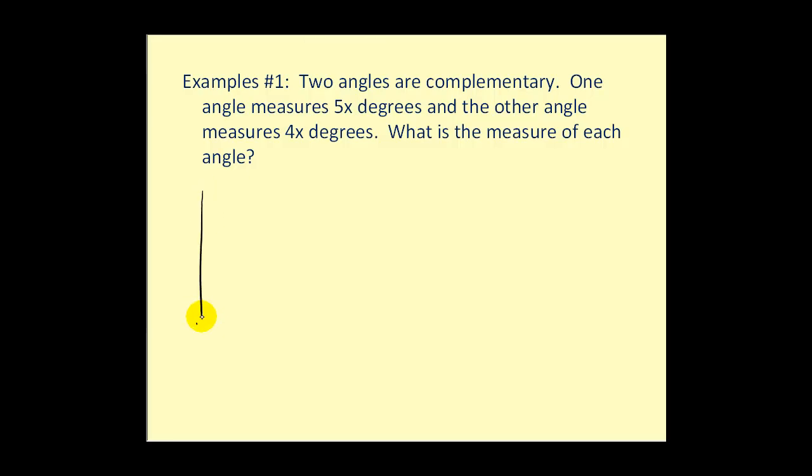So we start with a right angle. We can divide it into two different angles, where one angle is equal to five x degrees, and the other is equal to four x degrees. And for these examples, I'll leave the units off until the end. So if they're complementary, we'd have four x plus five x equals ninety.